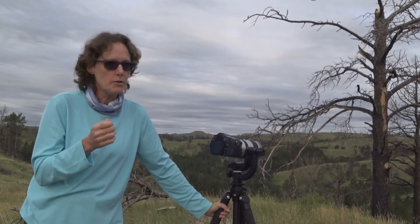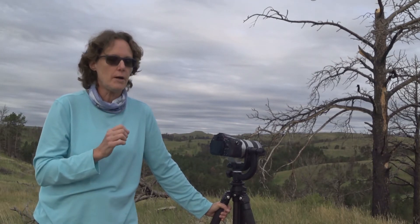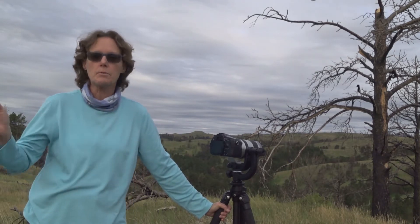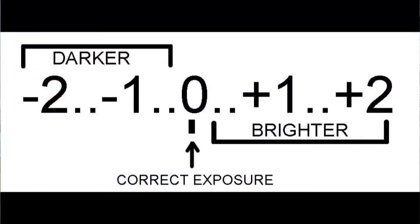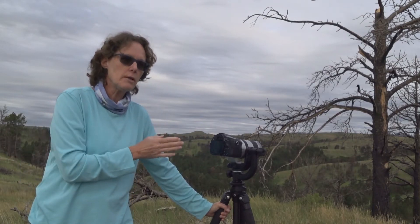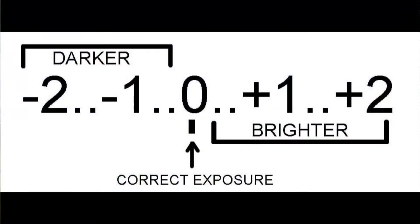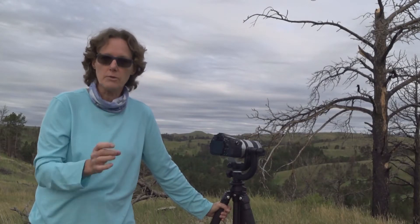Notice that on your camera's meter, that scale you see in the viewfinder — notice the numbers to the right and to the left of that middle point. The numbers to the right are when you add light to the exposure, so you're overexposing above standard exposure. The numbers to the left are subtracting light, so you are underexposing below the standard exposure.